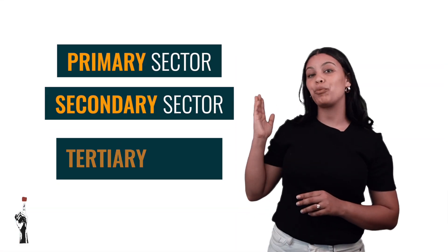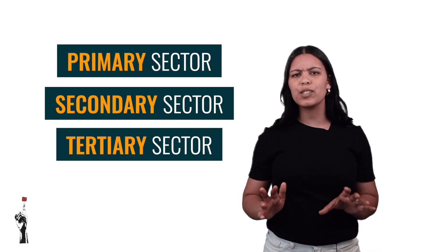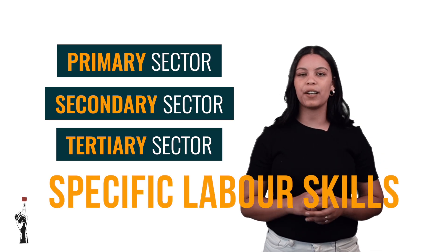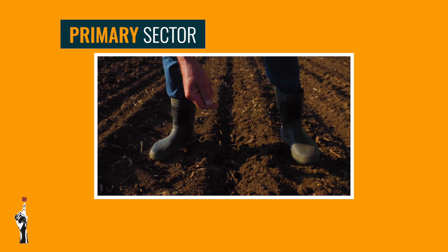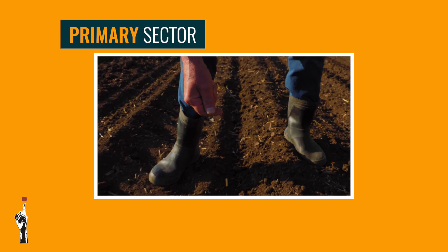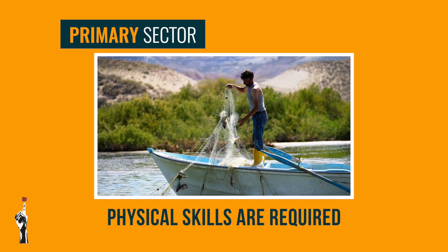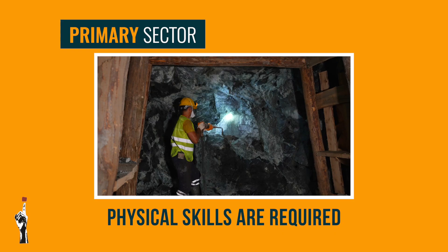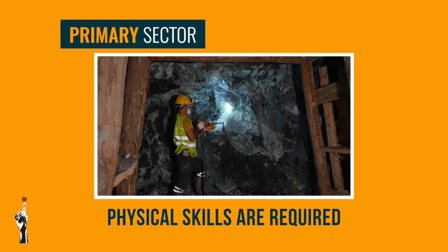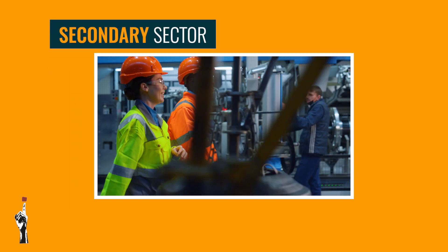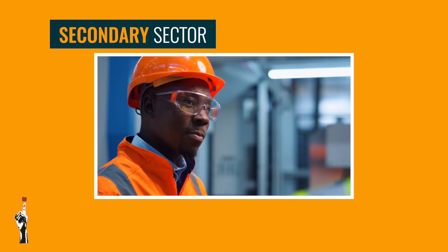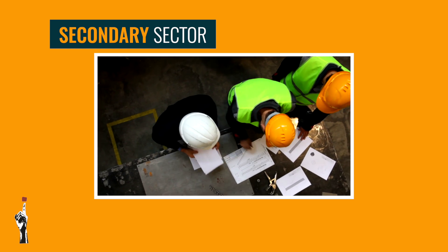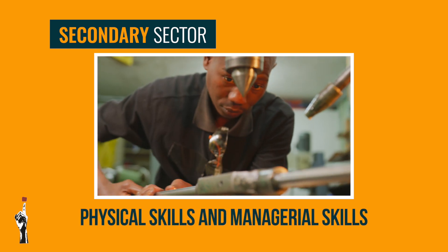When we look at the three economic sectors, we see that there is tons of work to do. Each sector requires specific skills to complete the duties in the business. The primary sector requires hard work excavating the raw materials for production. Physical skills are required, which labourers can learn as they work, such as digging, mining and fishing. In the secondary sector, there is a big responsibility to operate machines effectively and safely, as well as managing the factory plant. Here we require physical skills and managerial skills.